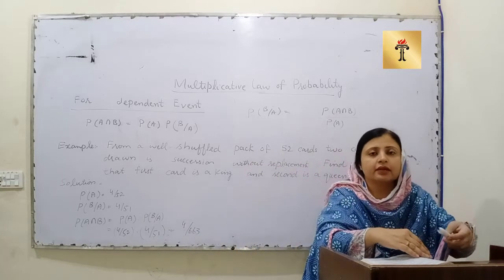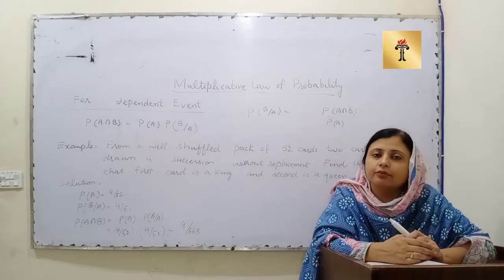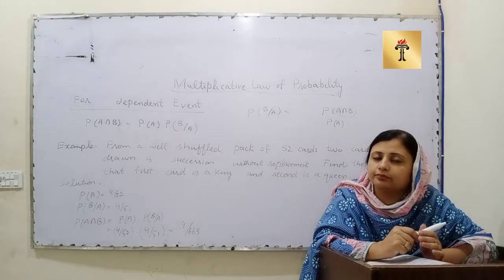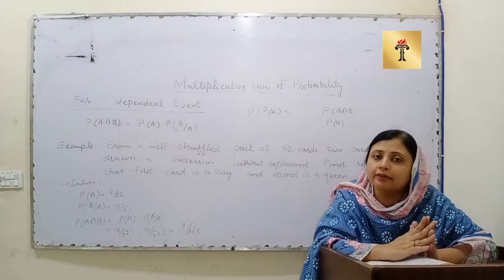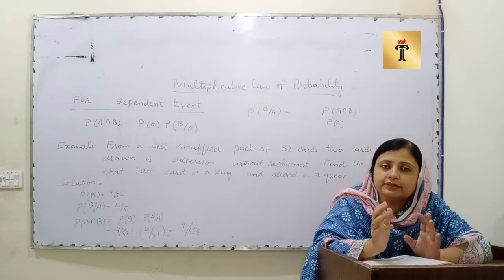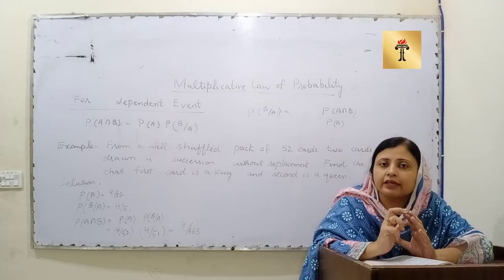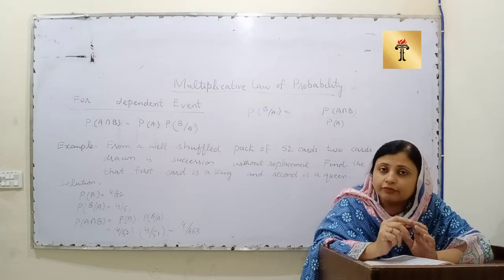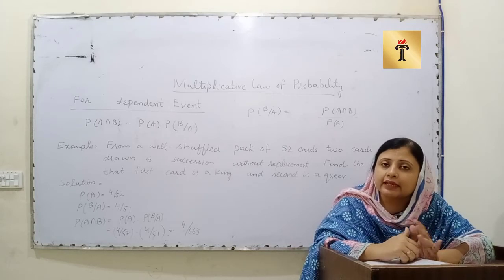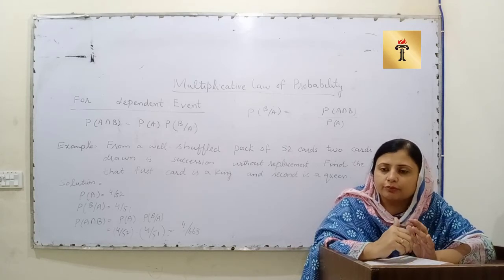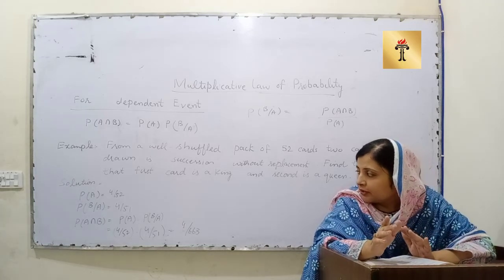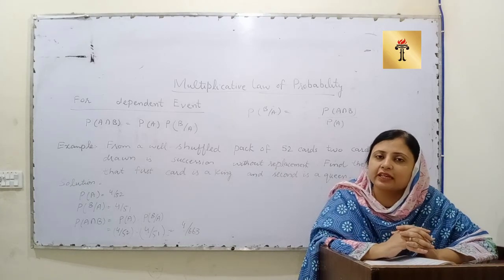To summarize: when events are independent we simply multiply the probability of both events to find the total probability. When events are dependent, we find the probability of A and then the probability of B given that A already exists, using the formula P(A∩B) = P(A) × P(B|A). In the next class, we will start a new topic.